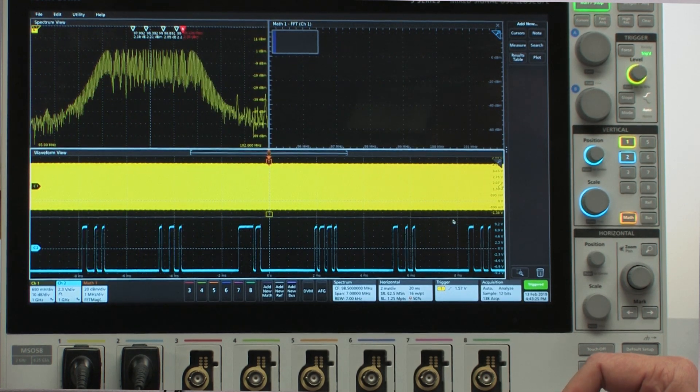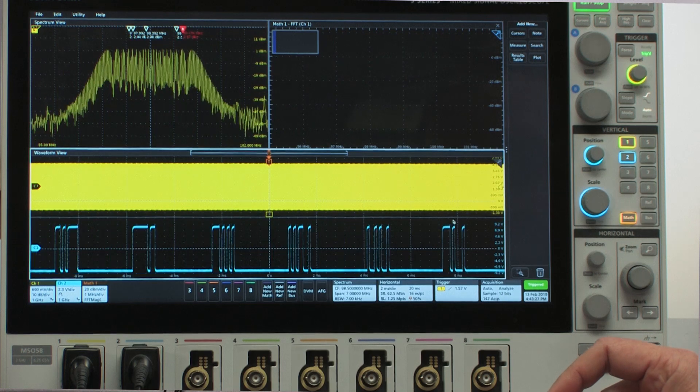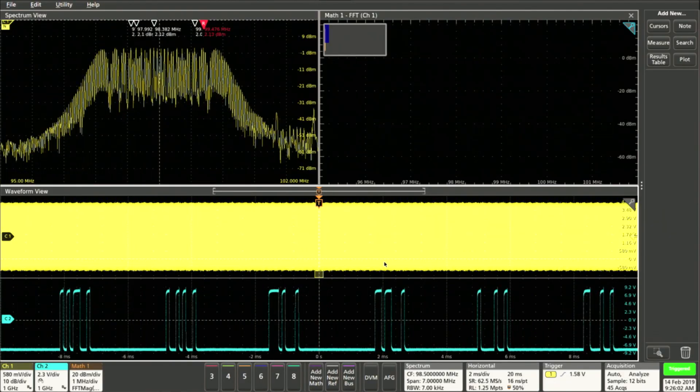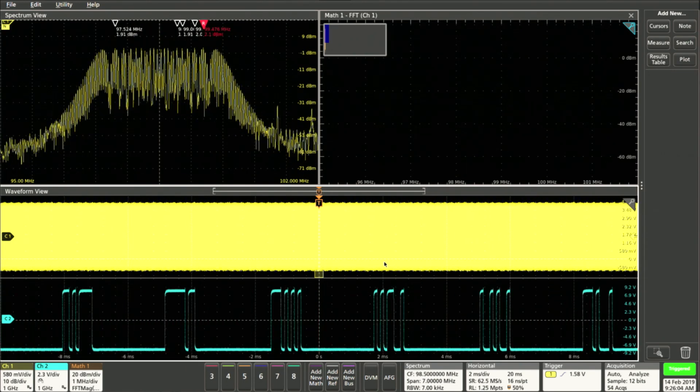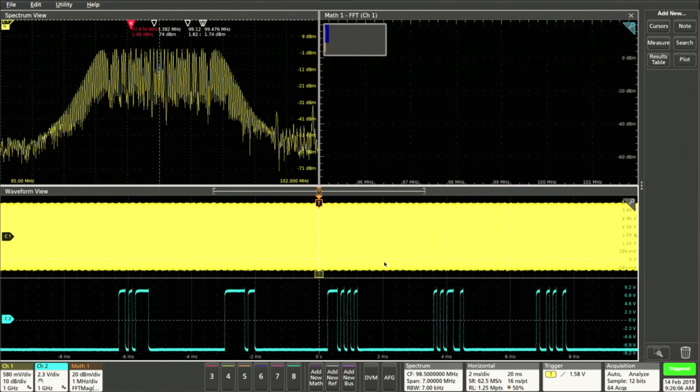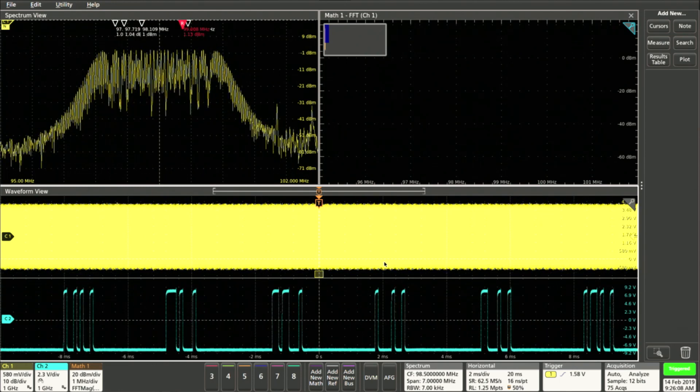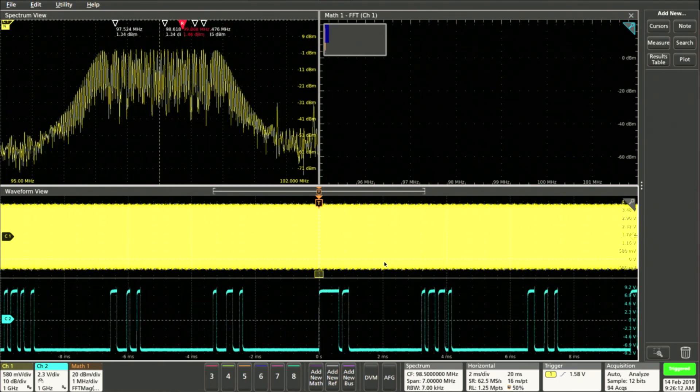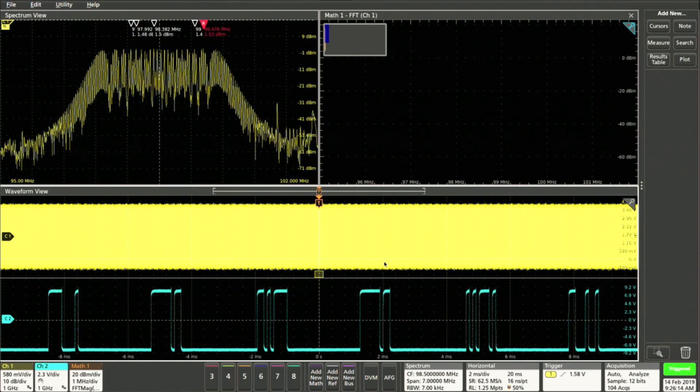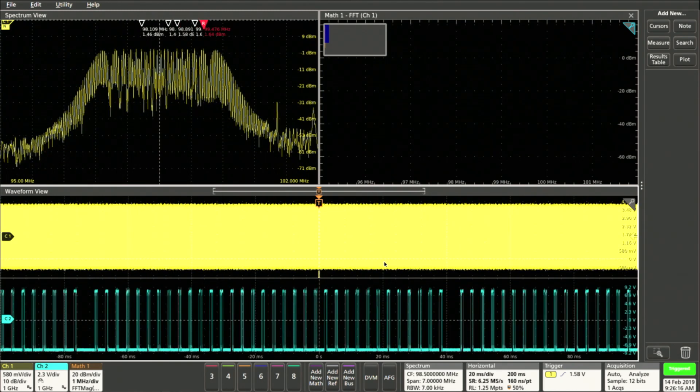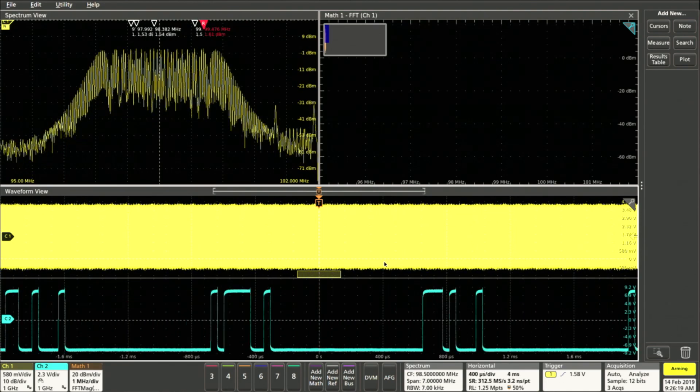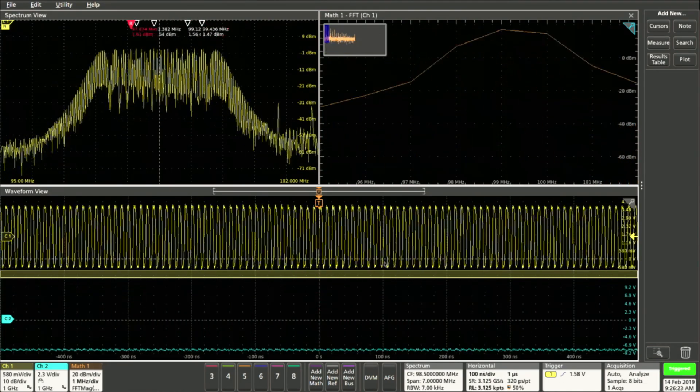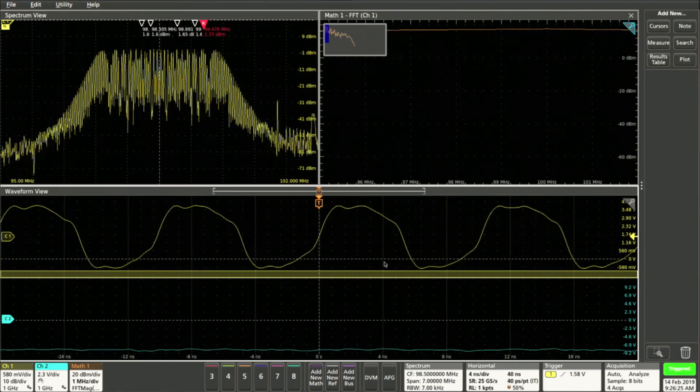So in summary, Spectrum View addresses the two key shortcomings of traditional FFTs in terms of frequency domain analysis on an oscilloscope. It's exceptionally easy to set up, and you get independent controls for your time domain view and your frequency domain view, so you maintain a useful frequency domain view at all times.